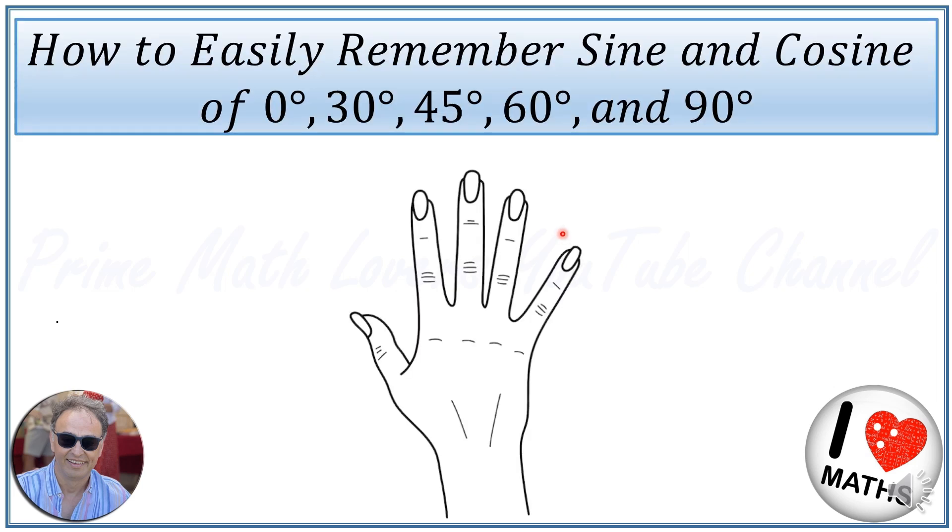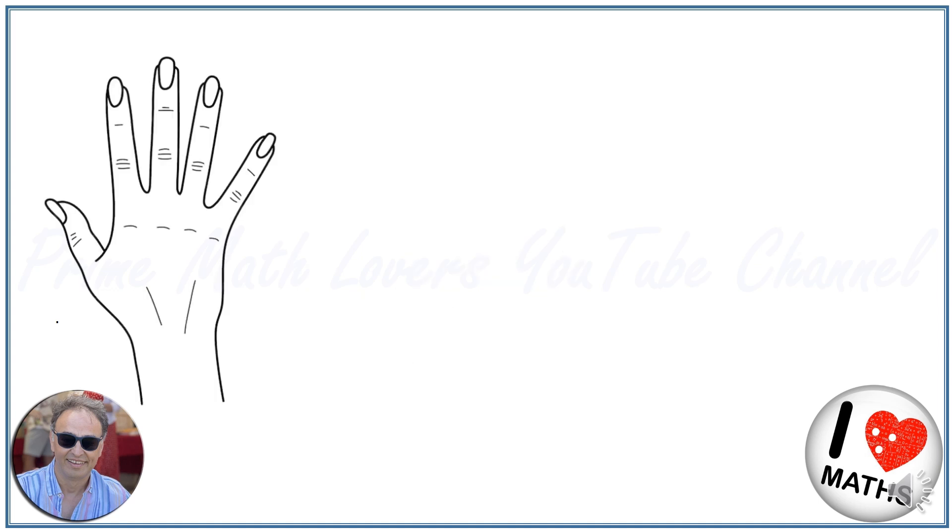Hello my friends, welcome to the Prime Math Lovers YouTube channel. Today we are diving into a neat little trigonometry trick to help you remember the sine and cosine values for some basic angles: 0 degree, 30 degree, 45 degree, 60 degree, and 90 degree. And guess what? All you need is your trusty hand. Okay, let's get to it.